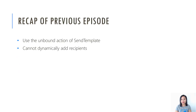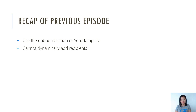In my previous WTF episode, I shared with you all how you can use a perform unbound action to send an email template. However, the constraint with that was how you can only send to a single recipient and you can't dynamically add recipients in terms of who else needs to receive that email when you're using an email template, which is what I'm going to be going through today.